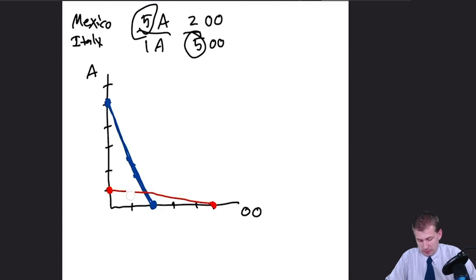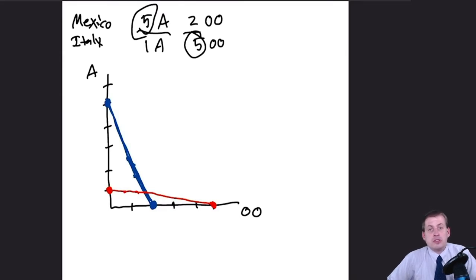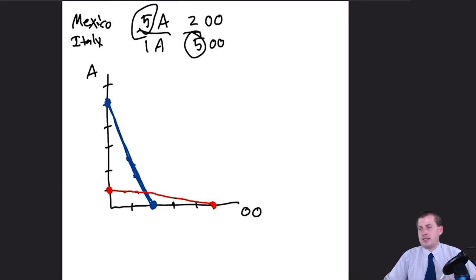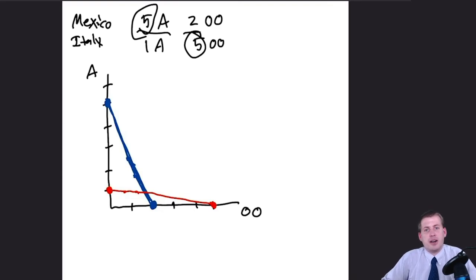Those are the two production possibility frontiers for Mexico and Italy. If they decide to trade, they'd want to determine whether it's a good idea — specifically, whether one country can get olive oil or avocados from the other for a cheaper price than producing it themselves. To figure this out we calculate comparative advantage.